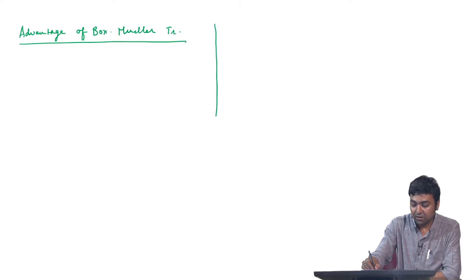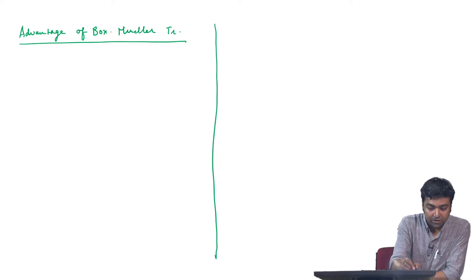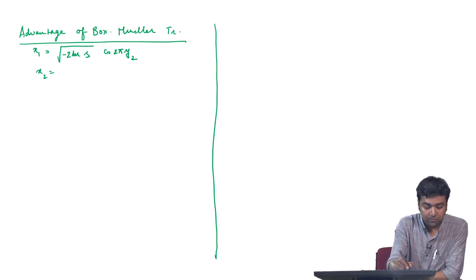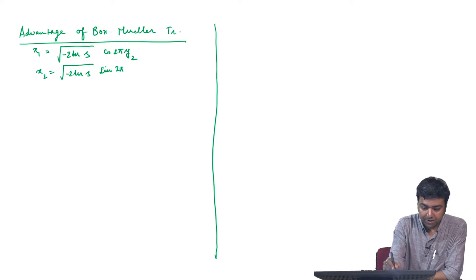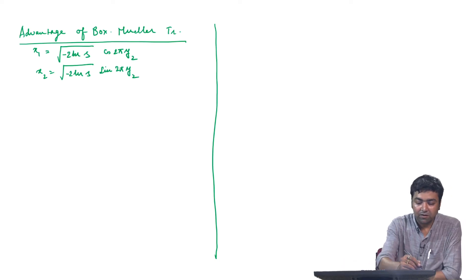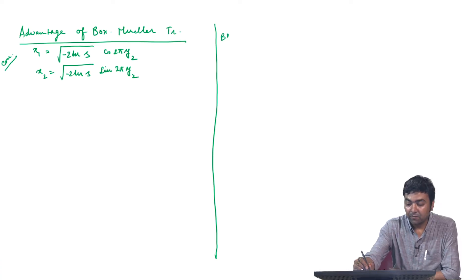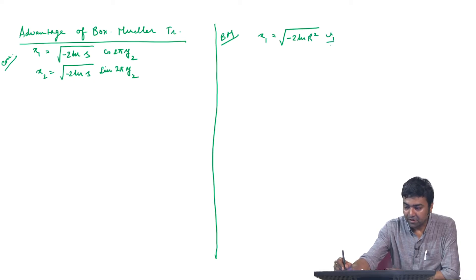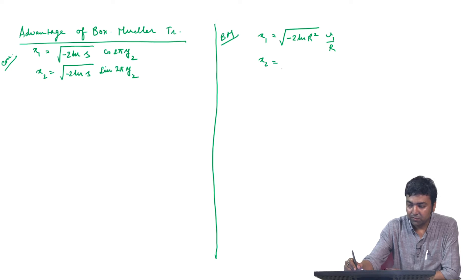To look into that, let me write down the two expressions. The conventional one is: x1 = sqrt(-2 log s) * cos(2π y2) and x2 = sqrt(-2 log s) * sin(2π y2). The Box-Muller version is: x1 = sqrt(-2 log r²) * v1/r and x2 = sqrt(-2 log r²) * v2/r.